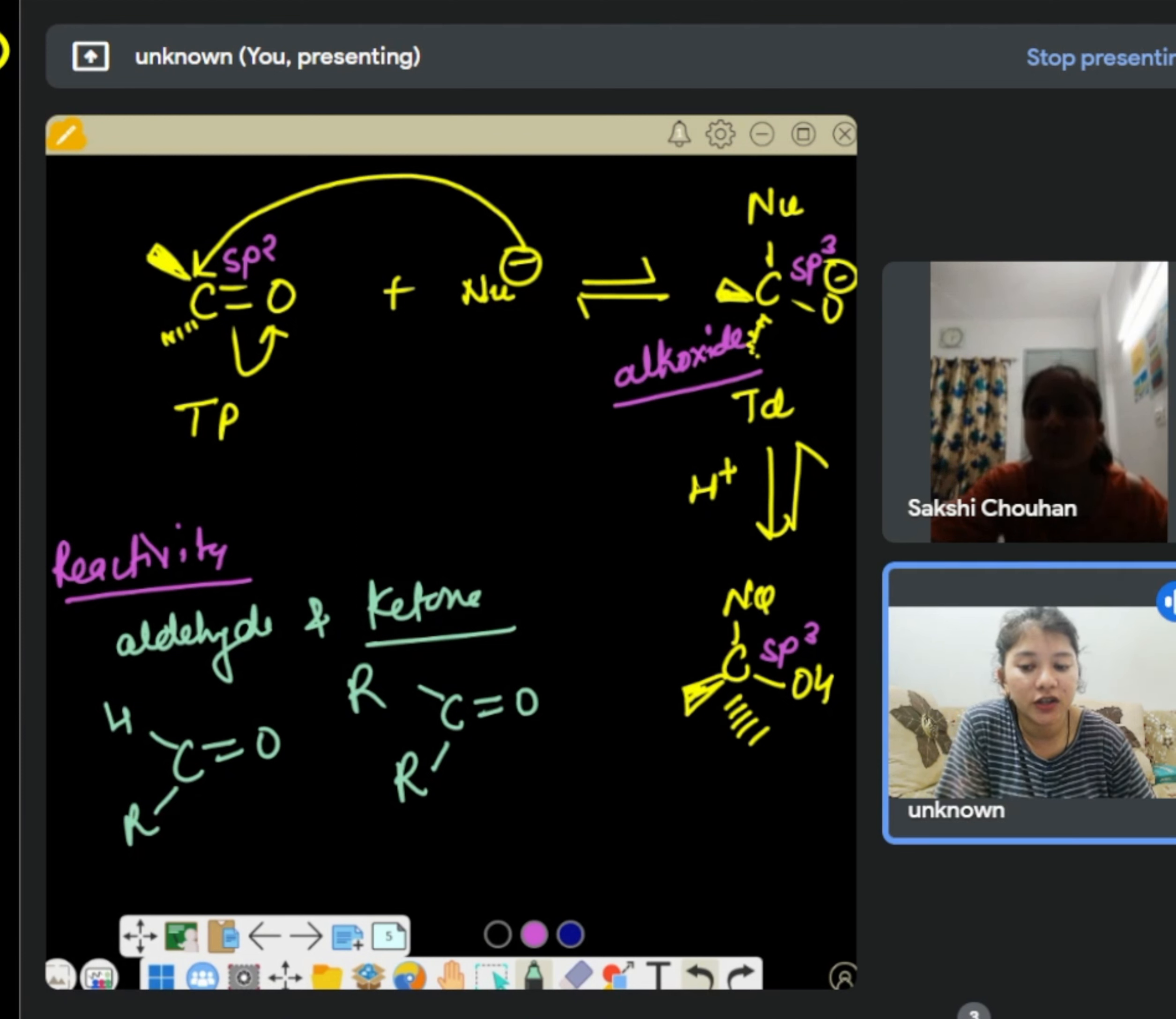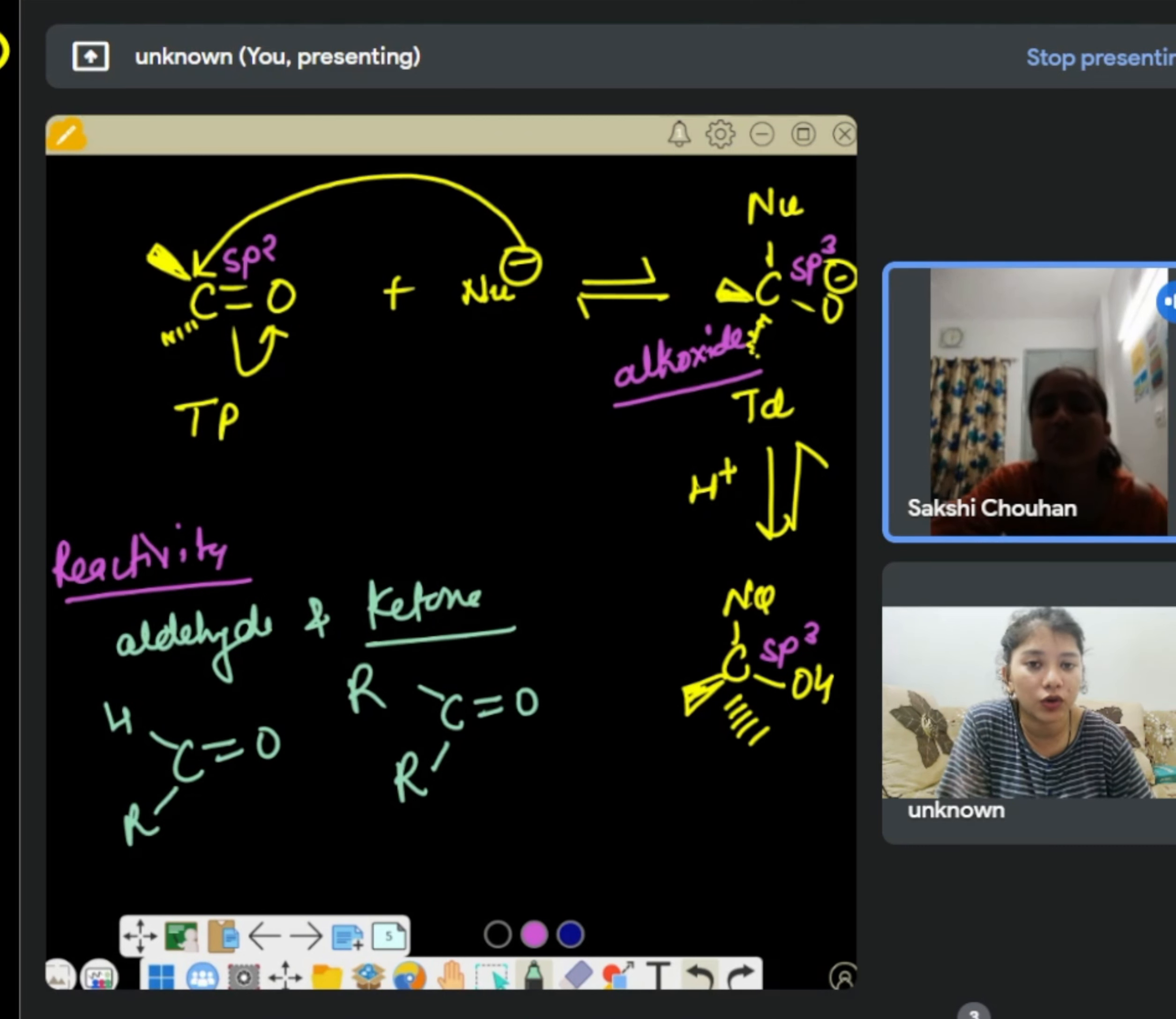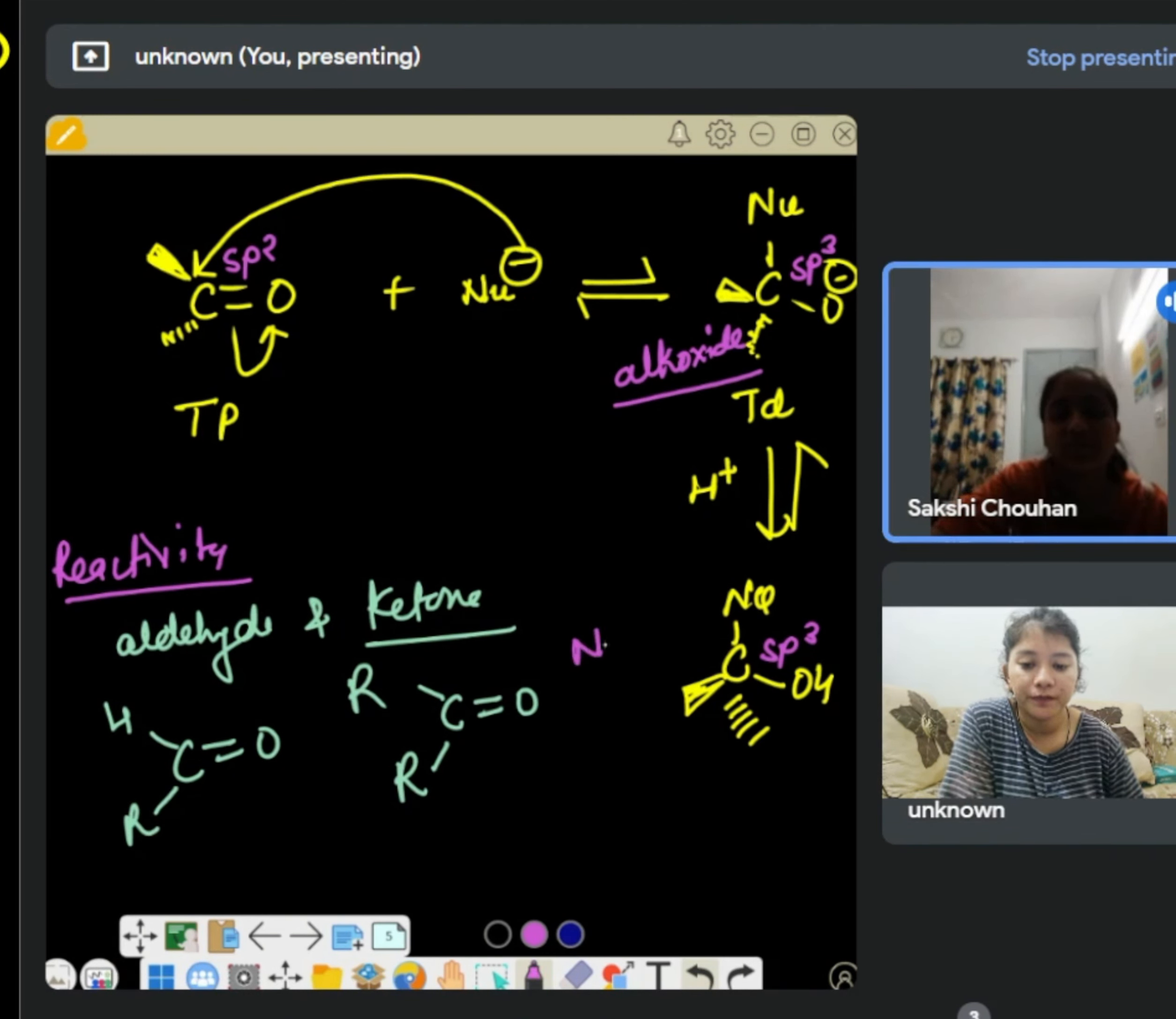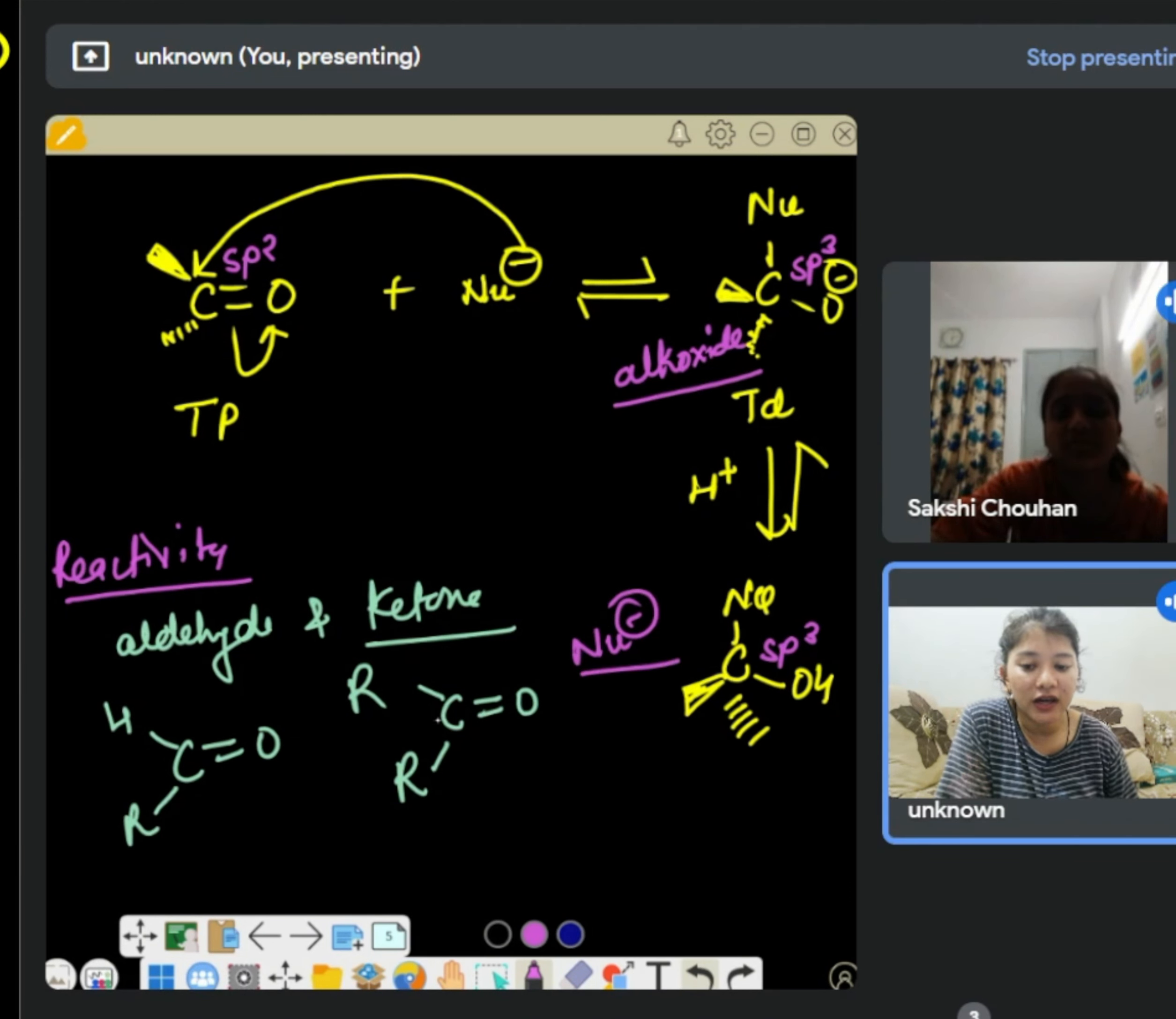You said steric hindrance is one of the factors, right? So what happens in ketone? So you are saying that nucleophile attack on aldehyde is better compared to ketone, right? Okay, so let's suppose this is your nucleophile. So nucleophile attacks carbon, and if you look at the carbon, on the carbon there is already 3 sigma bonds and 1 pi bond. This pi bond will be something like this, which is carbon and oxygen will be something like this.